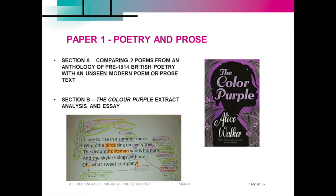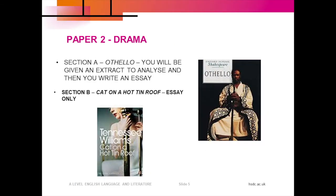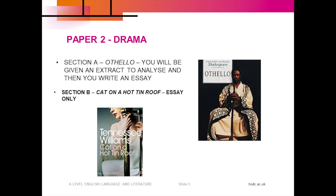For the first exam paper we study Alice Walker's famous novel The Color Purple, about the experience of African-American women in the Deep South, and an anthology of pre-1914 British poetry including poems by Shakespeare, Emily Brontë, and John Donne. For Paper 2 we study two classic plays: Shakespeare's tragedy about racism and jealousy, Othello, and Tennessee Williams' tragedy about the devastating effects of homophobia, Cat on a Hot Tin Roof.